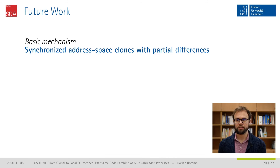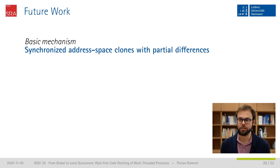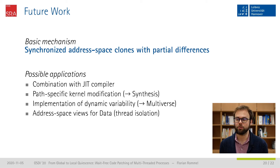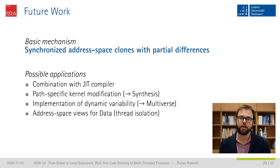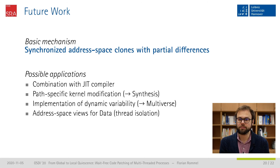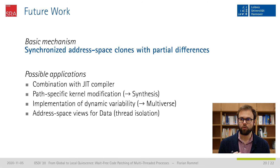We successfully used address-space generations for wait-free code patching, but we believe the mechanism of synchronized address-space clones with partial differences could also be used for other applications. For example, we could combine it with a JIT compiler and enable concurrent recompilation without changing pointers to the code. Similarly, the method could be used in kernel space for path-specific optimizations. We could also use the mechanism to support dynamic variability management, and use address-space views to isolate critical data between threads. We also believe it would be beneficial to further decouple the concepts of processes and address spaces in the kernel.